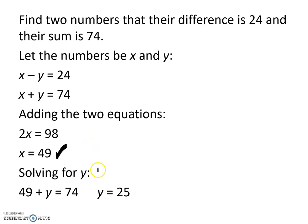Then we need to solve for y and I chose to use this equation x plus y equals 74. You could use either one of those equations to find y. But I used x plus y equals 74 and we know that x is 49. So we subtract 49 from both sides and we find that y equals 25. So our two numbers are 49 and 25 and their difference is 24 and their sum is 74.